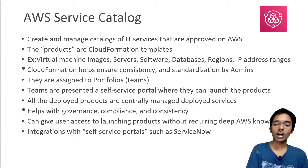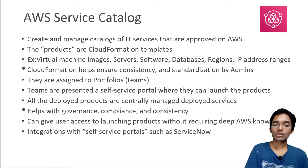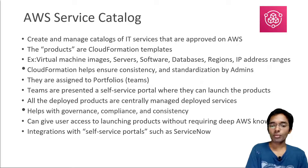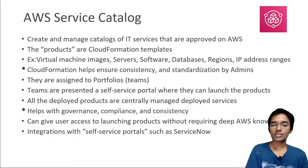Teams are presented with a self-service portal where they can launch products, and all deployed products are centrally managed through Service Catalog. We build this architecture to help with governance, compliance, and consistency. For the exam, whenever a user needs to launch products but doesn't require deep AWS knowledge or doesn't need to know all AWS options, you should use something like Service Catalog. Define these templates in advance for your users to make sure they can only do exactly what you intend — standardization in tagging, standardization in configuration, etc.